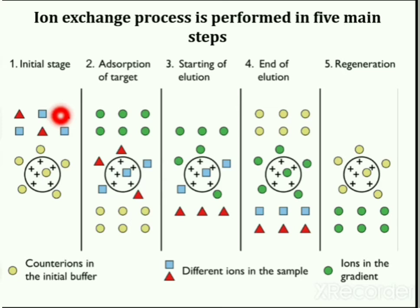Buffer pH and ionic strength are crucial for all forms of ion exchange chromatography. It is better to readjust buffer pH after adjusting salt concentration and ensure that buffer counter ions are compatible. Anionic exchange chromatography should be carried out with cationic buffers, and cationic exchange chromatography should be carried out with anionic buffers.